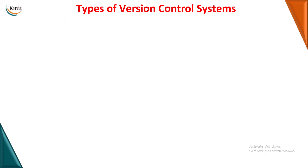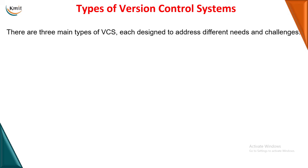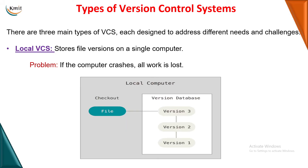There are three different types of version control systems. The first is the local version control system. Here, inside a single local computer, whatever modifications we are doing in our project are saved in the form of versions — the complete version history stays inside that single computer. The advantage is everything is in a single system, making it easy to track. The disadvantage is if the local system crashes, the complete project data is lost.